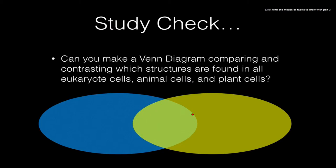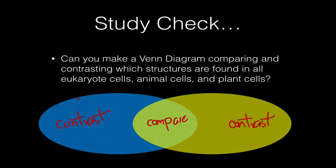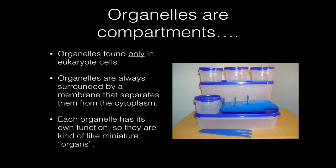A good way to organize this information is with a Venn diagram. In your notebooks, make a Venn diagram comparing and contrasting eukaryote, animal, and plant cells, and you'll be well on your way to understanding how to tell animal cells from plant cells. In the overlapping area you put what they have in common, and in the outer areas you put your contrasts. For example, make one side the animal cell and the other side the plant cell — with the things unique to each on their respective sides and all things in common in the middle. It's an easy, visual way to organize information.